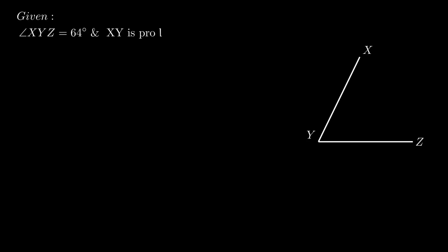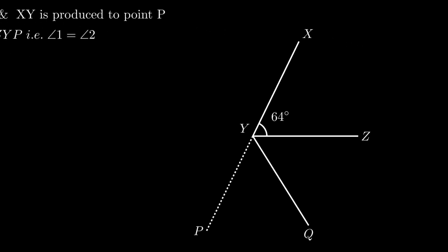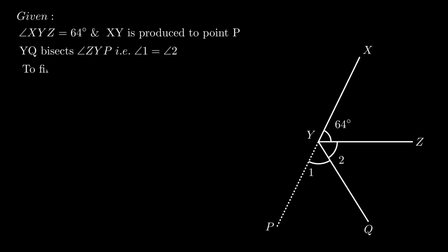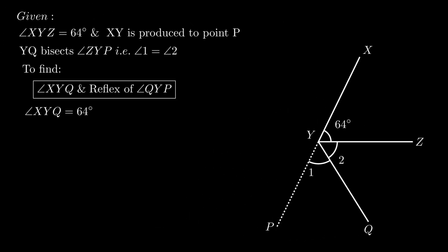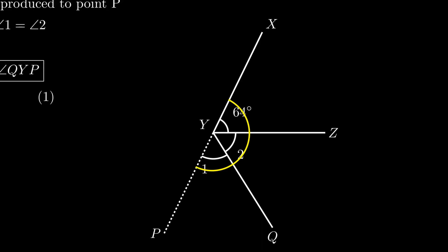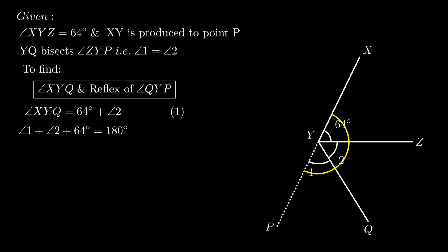Moving on to the next problem: angle XYZ equals 64 degrees and XY is produced to point P. Also, ray YQ bisects angle ZYP, that is angle 1 equals angle 2. We need to find the value of angle XYQ and the reflex of angle QYP. From the figure, angle XYQ equals 64 plus angle 2. Since the sum of angle 1, angle 2, and angle XYZ equals 180 degrees as these are angles formed on the same straight line.